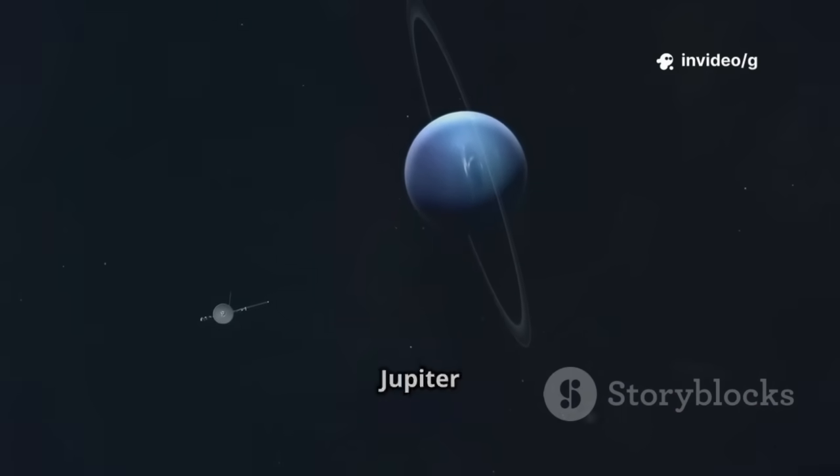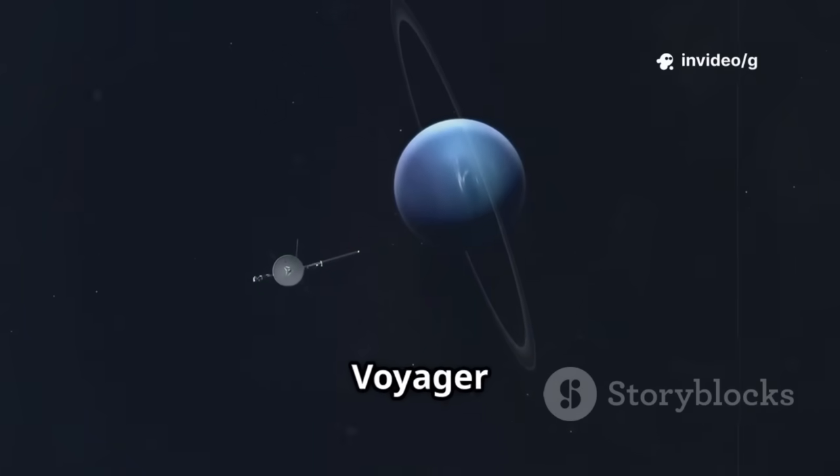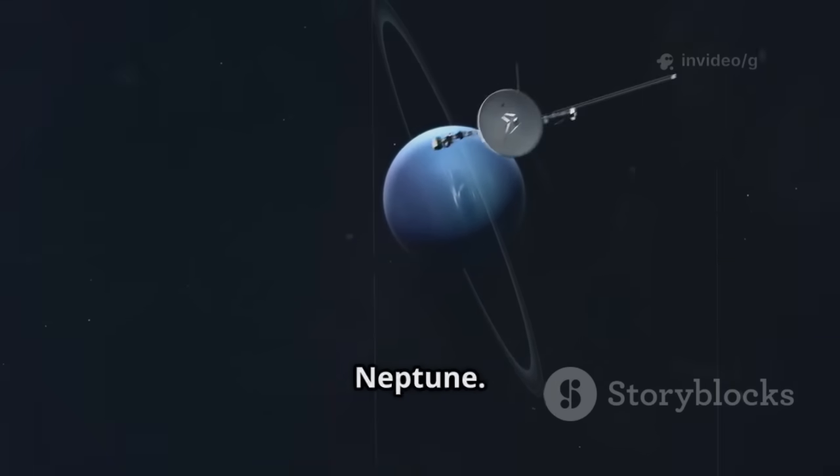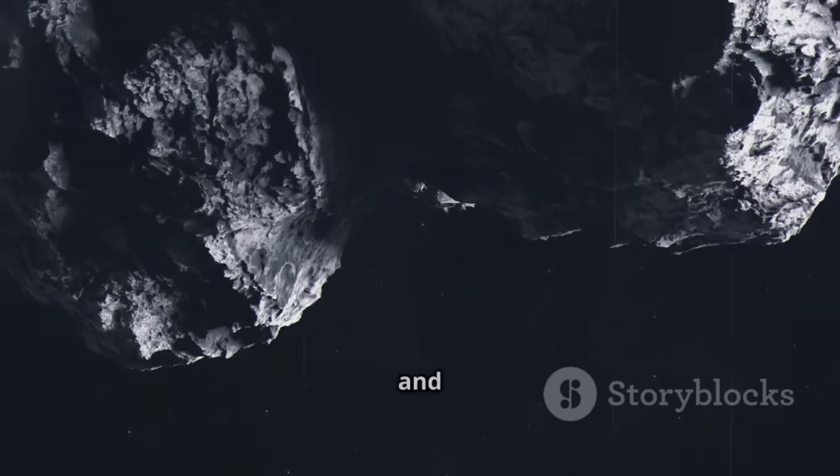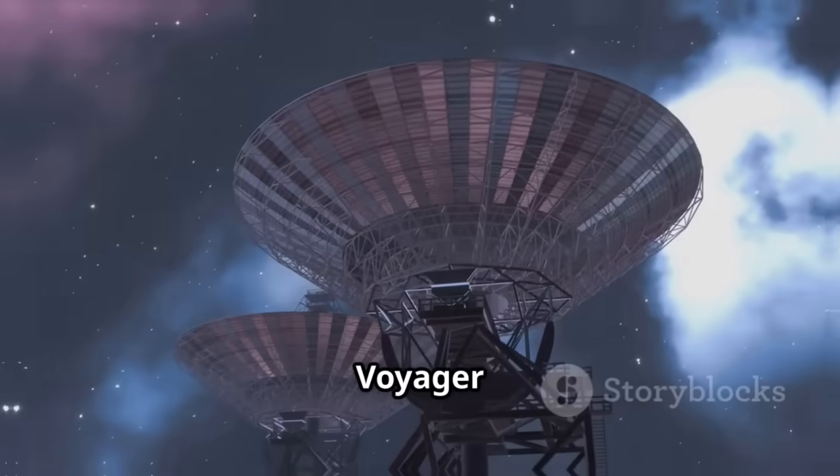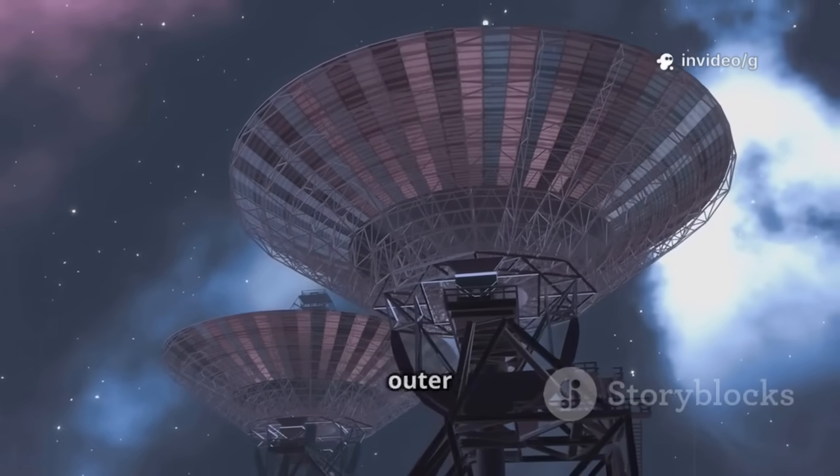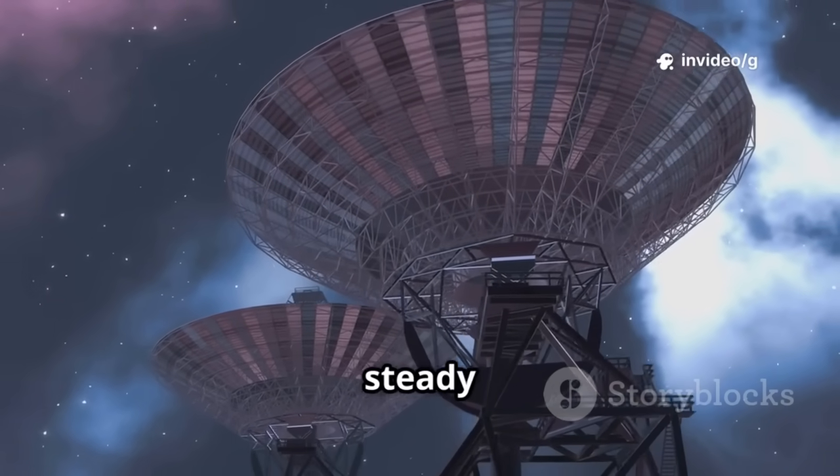While Voyager 1 visited Jupiter and Saturn, its twin, Voyager 2, would go on to Uranus and Neptune. The journey was long and lonely, crossing the asteroid belt and venturing into the unknown. Voyager 1 became our eyes and ears in the outer solar system, sending back a steady stream of data.